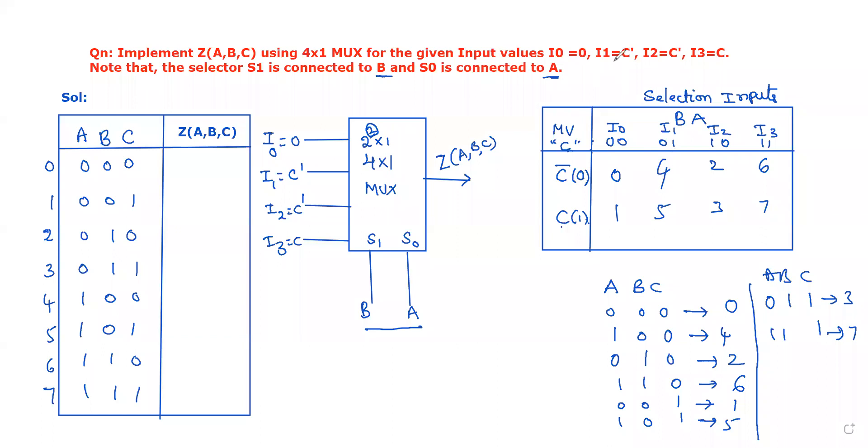Now, based on the given data I0 to I3, we should select the minterm numbers. I0 equal to 0 means no one is selected. I1 equal to C dash means in the first row, you have to select the fourth minterm. Similarly, I2 equal to C dash, you select the corresponding C dash value. Next, I3 equal to C, so you select the seventh value.